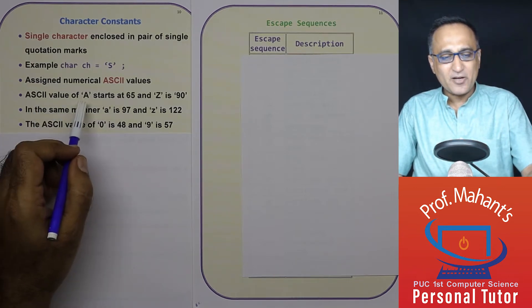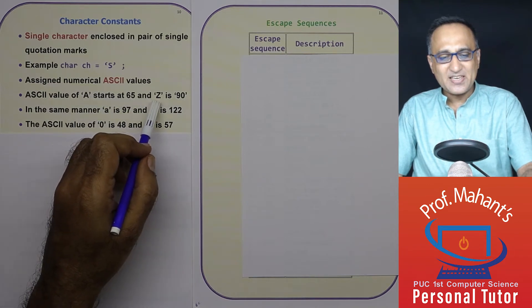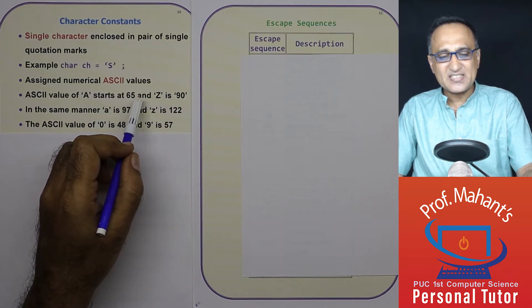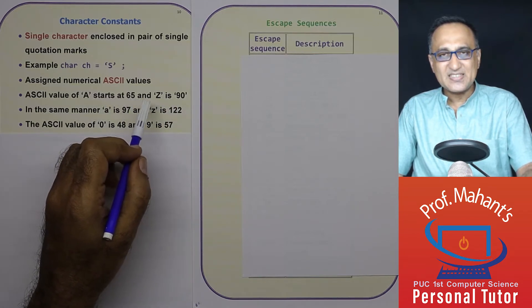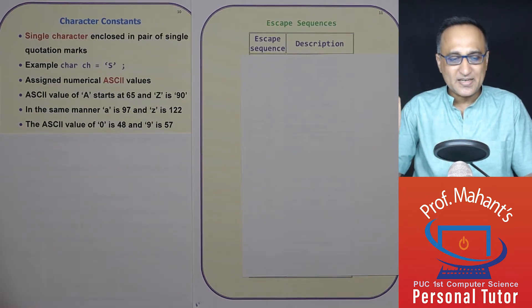For example, the ASCII value of capital A starts at decimal 65, ASCII value of capital Z is 90. So B is 66, C is 67 and so on. I am talking about capital B, capital C and so on.